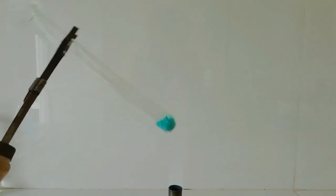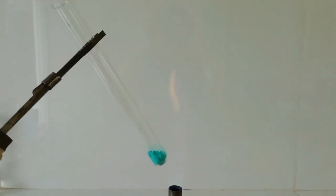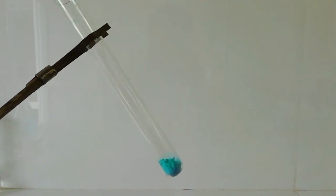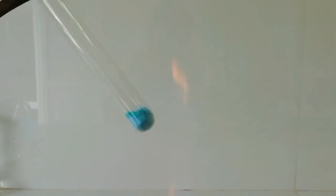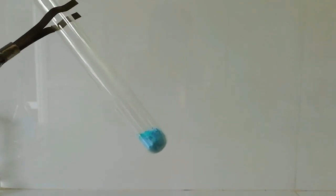In a test tube, I've taken about a few grams of copper citrate. Now we need to heat this copper citrate and decompose the product. You can see when I heat the test tube, the green color turns to blue.